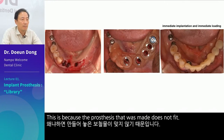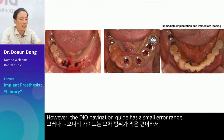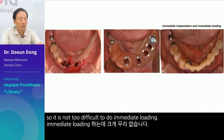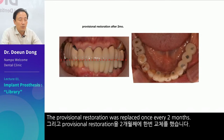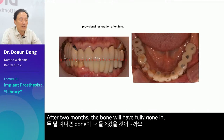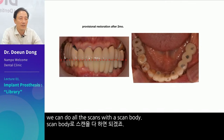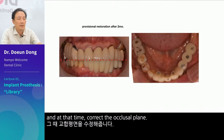However, the DIO navigation guide has a small error range, so it is not too difficult to do immediate loading. The provisional restoration was replaced once every two months. After two months, the bone will have fully gone in. Whether it's a stock abutment or whatever else, we can do all the scans with a scan body. Place provisional restoration using the library, and at that time, correct the occlusal plane. This process can also be done using software.